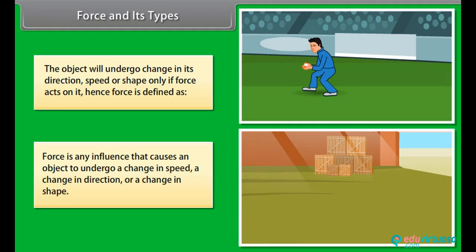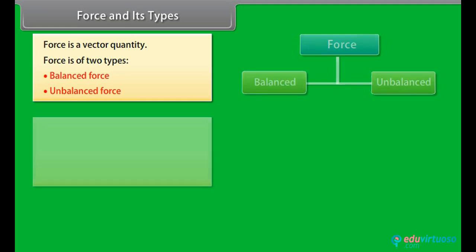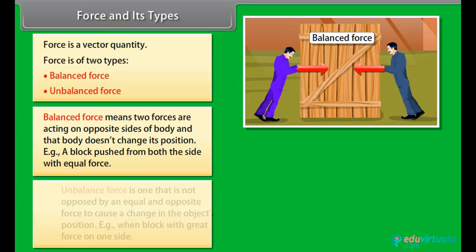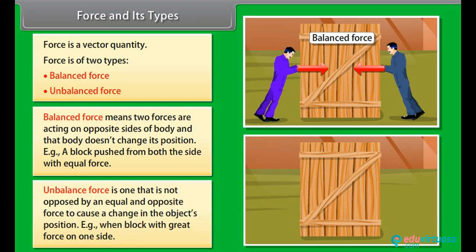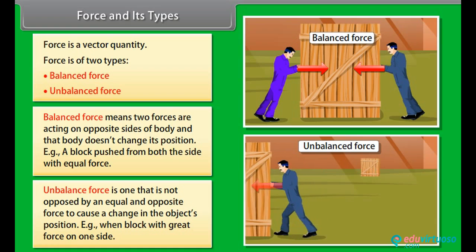Force is of two types: balanced and unbalanced. Balanced force means two forces are acting on opposite sides of the body and that body does not change its position. Example: a block pushed from both sides with equal force. Unbalanced force is one that is not opposed by an equal and opposite force to cause a change in the object's position. Example: when block with great force on one side.